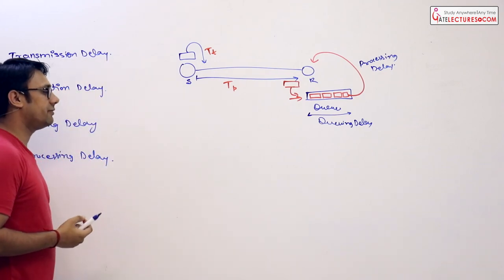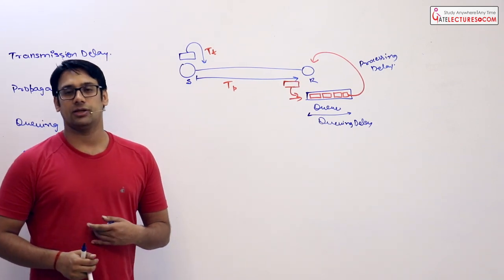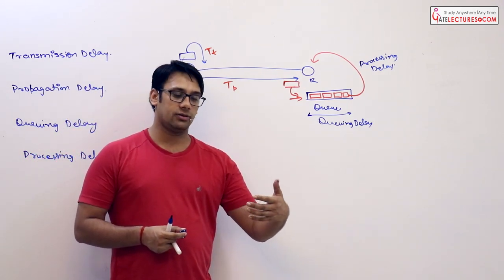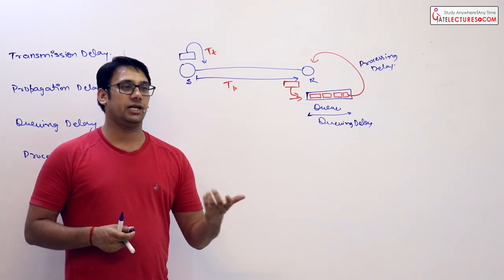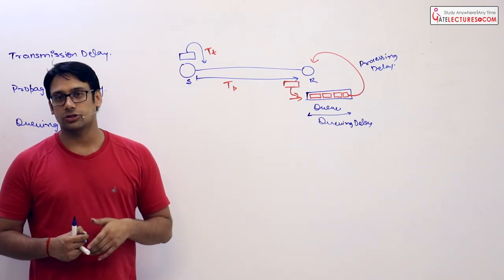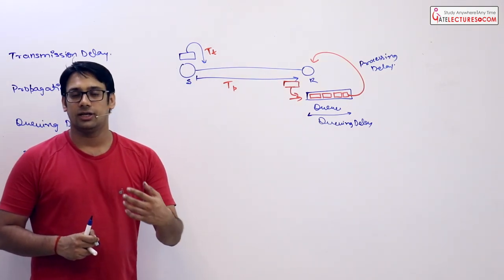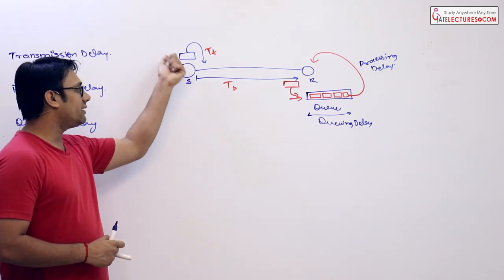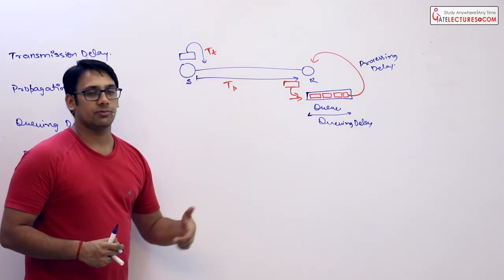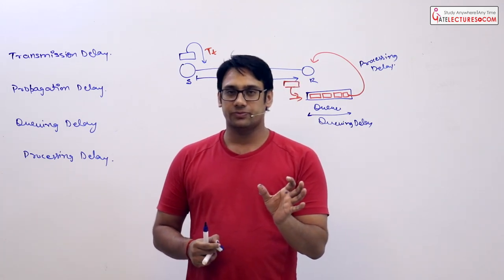There is a very interesting fact: we have no idea what the queuing delay will be, and we have no idea what the processing delay will be. Sometimes the receiver's operating system may be busy with another task and won't be available instantaneously, but in some cases the processor will be available immediately. So queuing delay is not constant — it is always changing. We know exactly what propagation delay and transmission delay will be because signal speed, distance, data packet size, and bandwidth are all fixed.